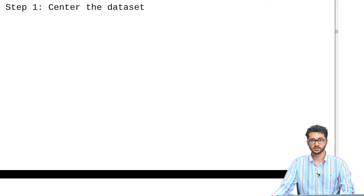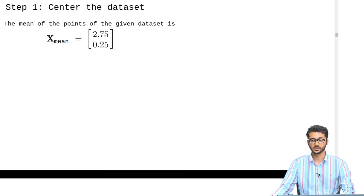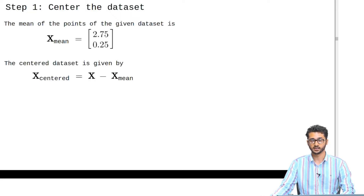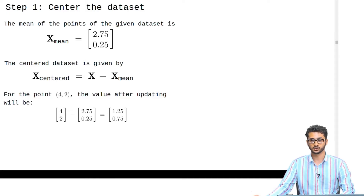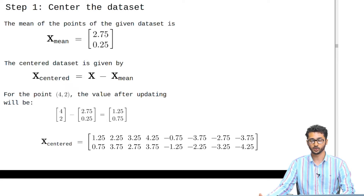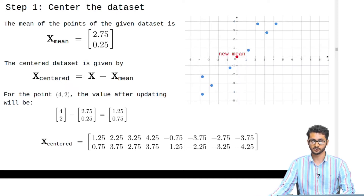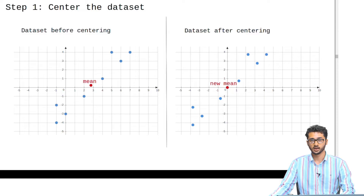To center this dataset, first we will calculate the mean, and once we have the mean we subtract it from each point and write it as a new dataset x_centered. For example, consider a point (4, 2) — the value we get after centering it will be (1.25, 0.75). We do this for all the points and write them in a matrix called x_centered. Now if we look at the graph, you can see that it is centered. A side-by-side comparison of the two shows the operation we have performed.